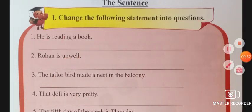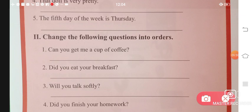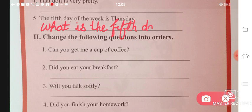Next is number fifth. 'The fifth day of the week is Thursday.' The question becomes 'What is the fifth day of the week?' The fifth day of the week is Thursday. That will be your answer. Write the complete question and don't forget the question mark at the end.